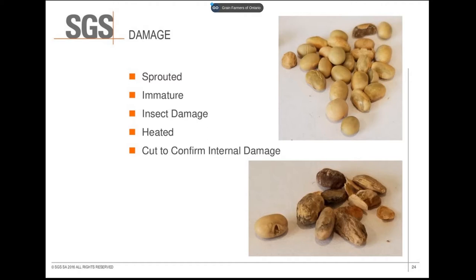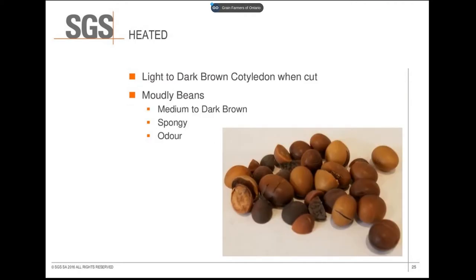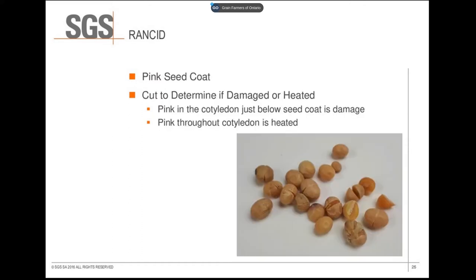Soybeans that appear to have internal damage should be cut to confirm. The maximum allowed damage for a number one is 2%, and the maximum for a number two is 3%. Heated beans occur in storage and are light to dark brown in color when cut. Moldy beans are wrinkled and misshapen, medium to dark brown with grayish mold on the seed coat, usually spongy with an unpleasant odor. Number one soybeans are not allowed to have any heated beans; in number twos, up to 0.2% is allowed. Rancid soybeans show pink discoloration on the seed coat and inside the bean — if just below the seed coat, it's graded against overall color; if in but not through the bean, it's considered damage; if through the entire bean, it is classified as heated.